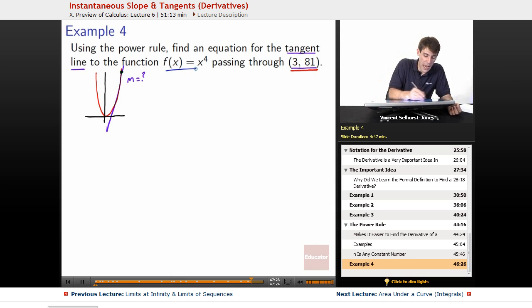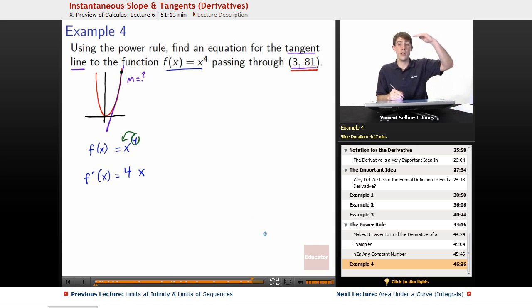So, how can we take the derivative if we've got f of x equals x to the fourth? The power rule says that we can get the derivative, f prime of x, by taking the exponent and bringing it down in the front. So, we've got 4 times x, and the exponent goes subtract by 1. So, 4 minus 1 becomes 4 times x cubed.